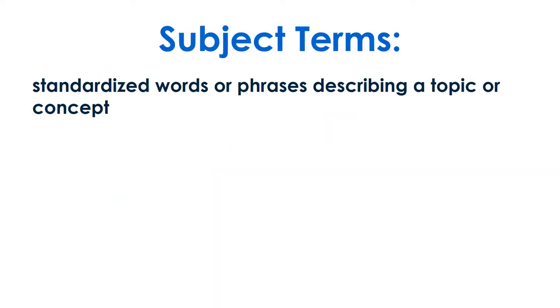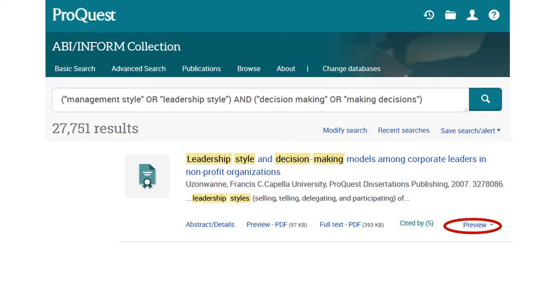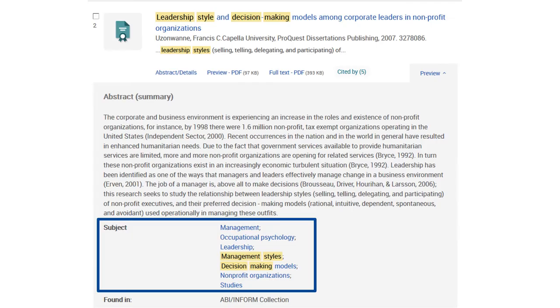Next, from your search results, find subject terms. Subject terms are standardized words or phrases used to describe a topic or concept, assigned to individual items by librarians. Find an item in the search results that matches your concept, then click on the item details to see subjects listed.